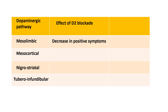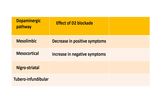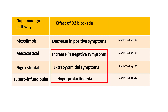When D2 receptors are blocked in the mesocortical pathway, there is a tendency for an increase in negative symptoms. Blockade of D2 receptors in the nigrostriatal pathway results in extrapyramidal symptoms. Blockade of D2 receptors in the tuberoinfundibular pathway can lead to hyperprolactinemia. These are obviously unwanted effects of a D2 receptor blocker.